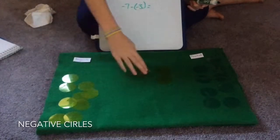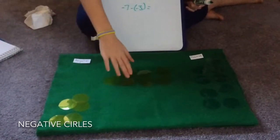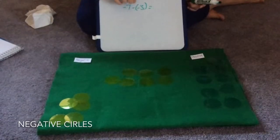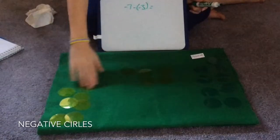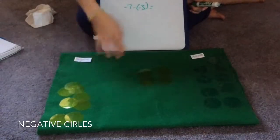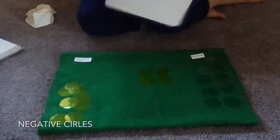So we'll get negative seven: one, two, three, four, five, six, seven negatives. And then we subtract, but that means take away, and we take away three negatives. So one negative away, two, three, we're taking away three, and we're left with four negatives. So negative four must be the answer. And it is.